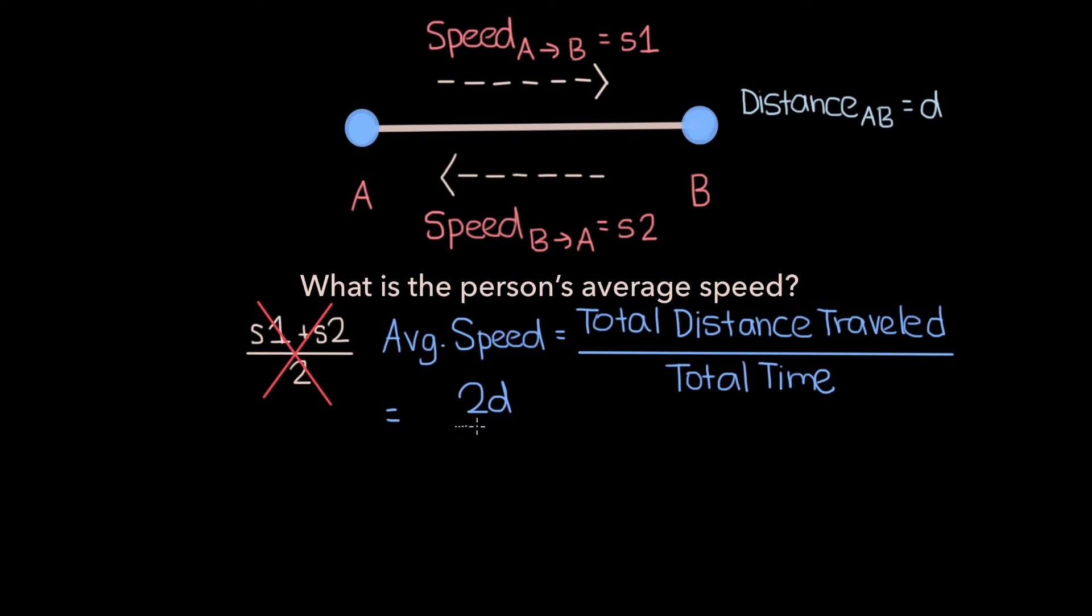Now to get the average speed we need to divide this by the total time which I'm going to say is T1 plus T2, where T1 is equal to the time it takes to go from A to B and T2 is equal to the time it takes to go from B back to A.